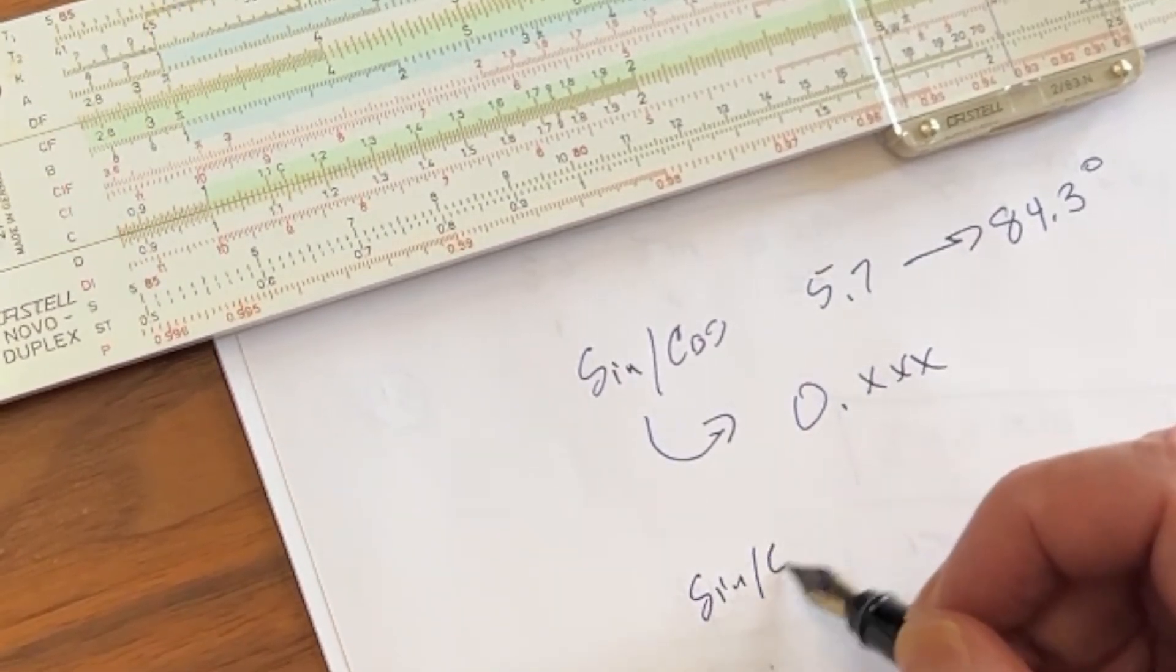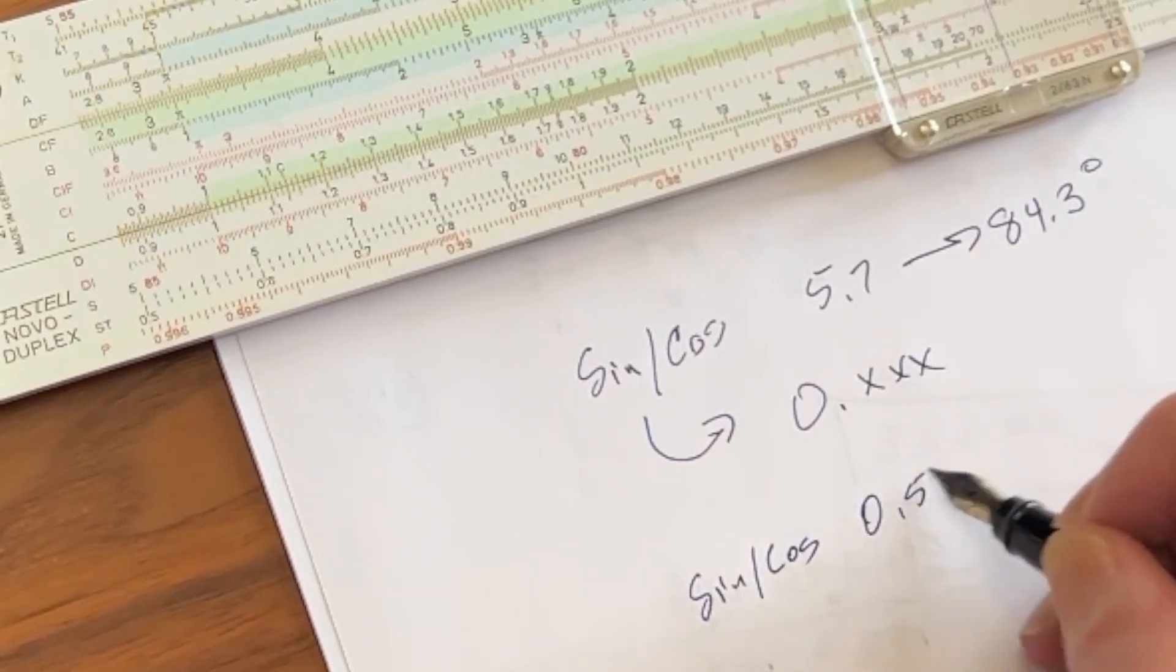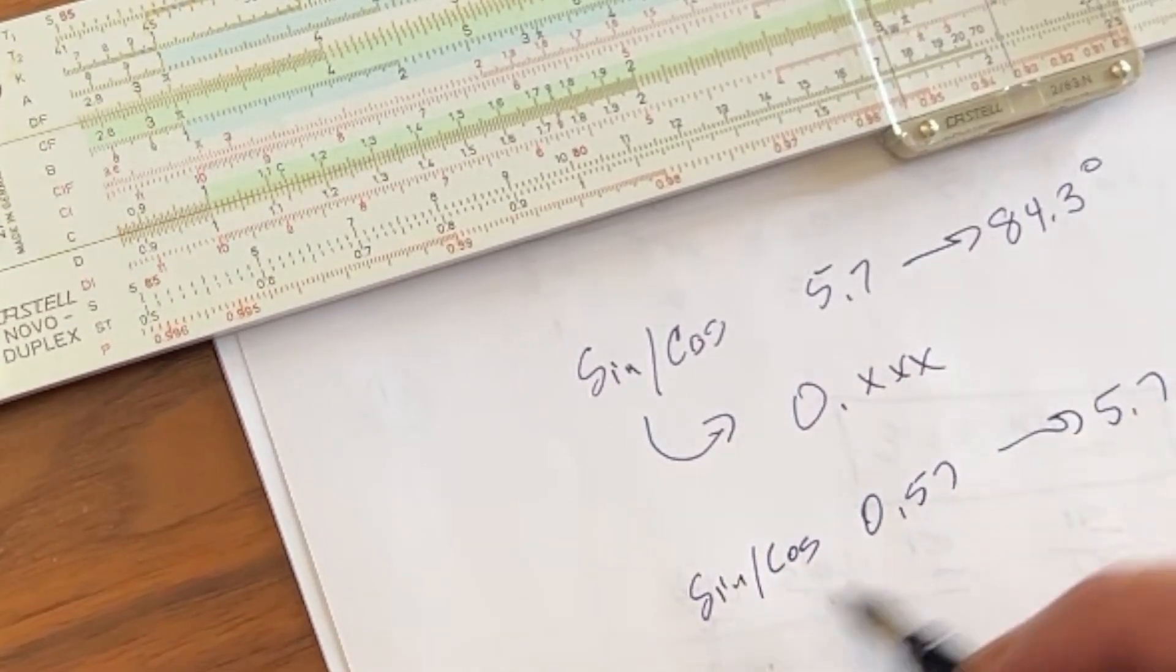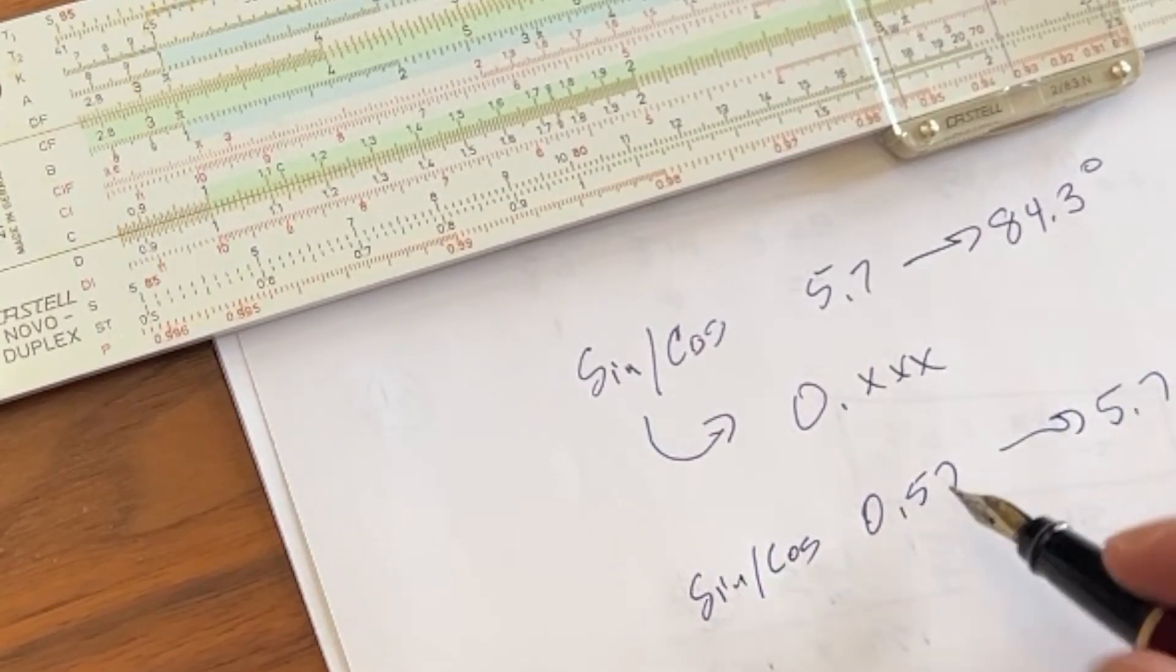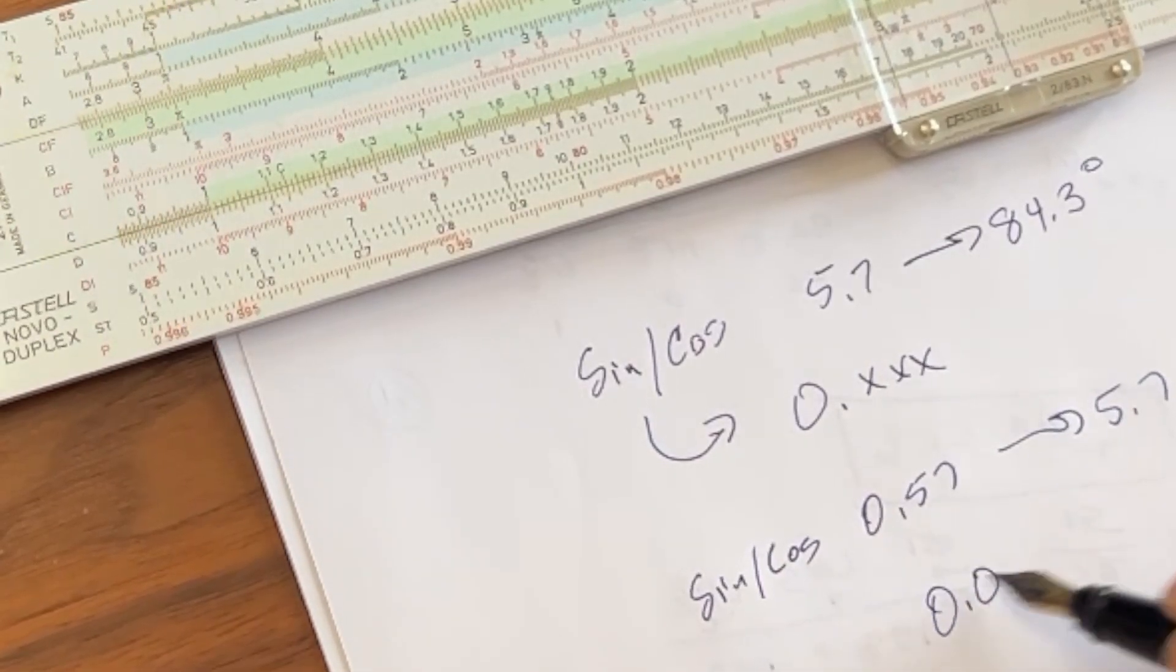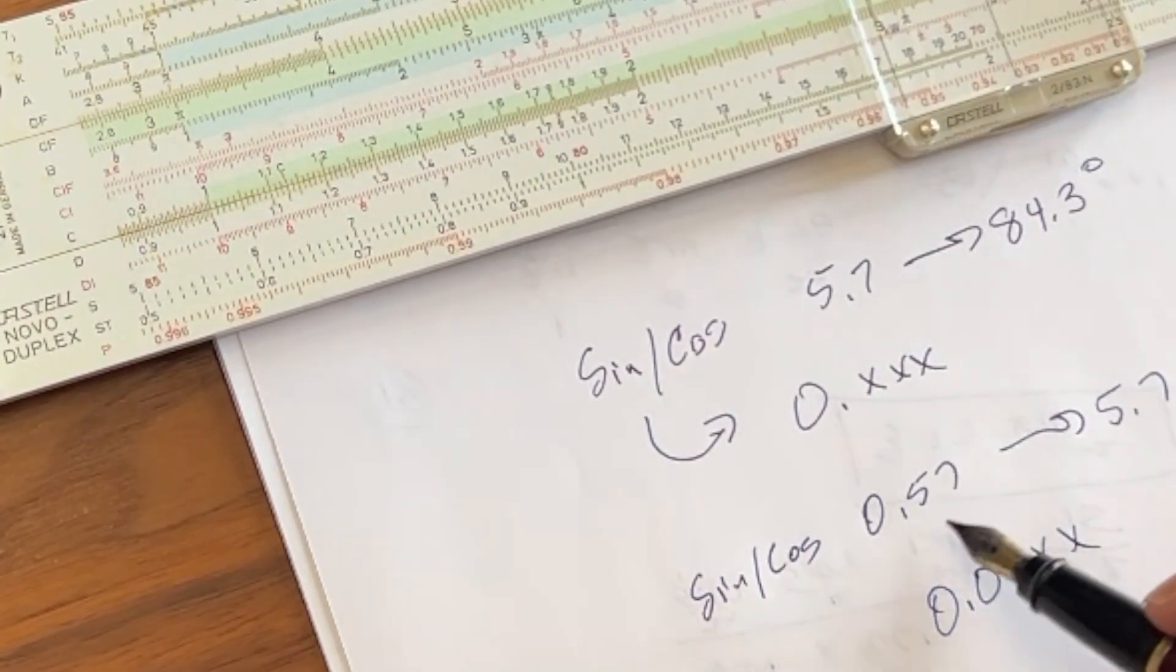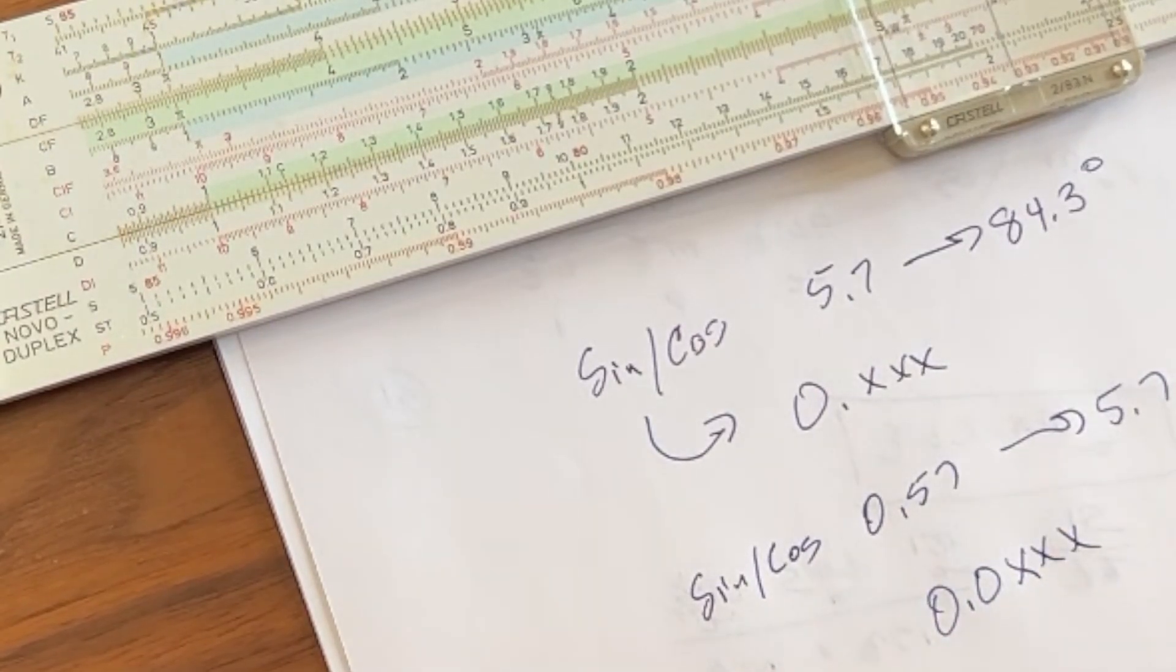if you have a sine and cosine value between 0.57 to 5.7, the value of your sine and cosine are going to be 0.0xxx. And obviously if it's below this, it's going to be even lower.